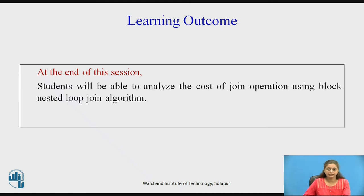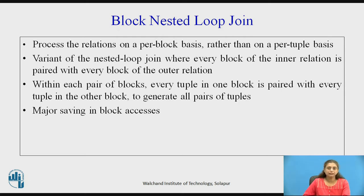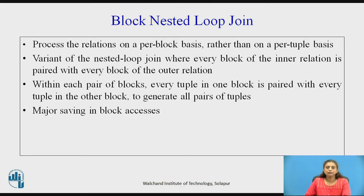In the previous lecture we have already seen nested loop join, where we compare tuple by tuple the relations R and S. In block nested loop join, we are going to process the relation on a block basis instead of a tuple basis. Every block of the inner relation will be paired with every block of the outer relation, and within each pair of blocks, every tuple of one block is compared with every tuple of the other block to generate the result.